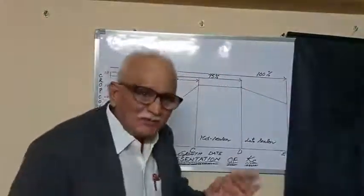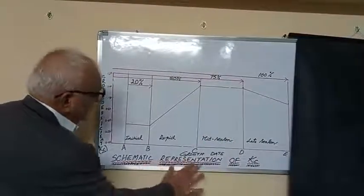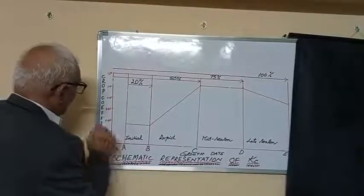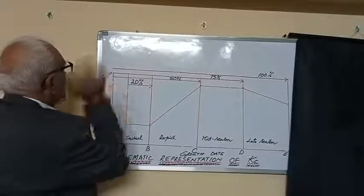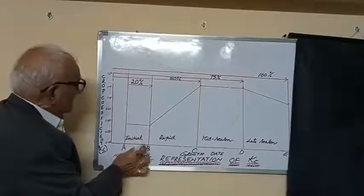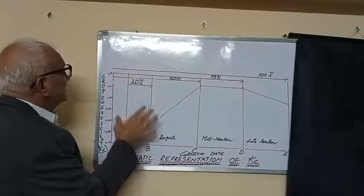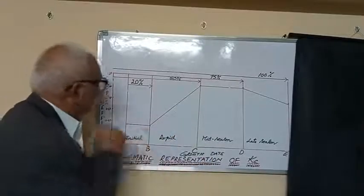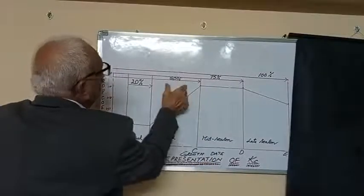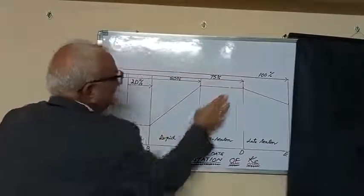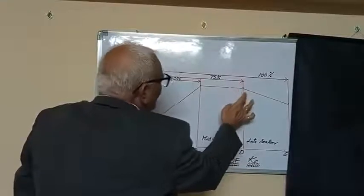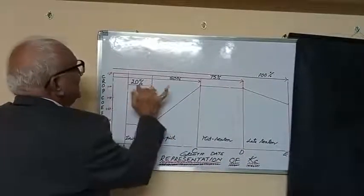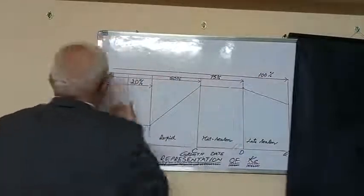The KC curve is a schematic representation of KC values. During the initial phase of crop growth, about 20% is contributed by both evaporation and transpiration. During the rapid development stage, it reaches 50%; during mid-season, 75%; and after the crop has physiologically matured, 100% in the late season. So the schematic shows 20%, 50%, 75%, 100% across crop growth stages.